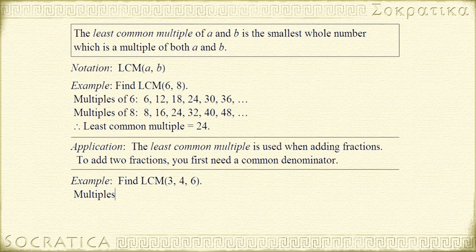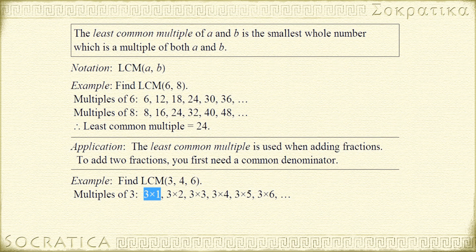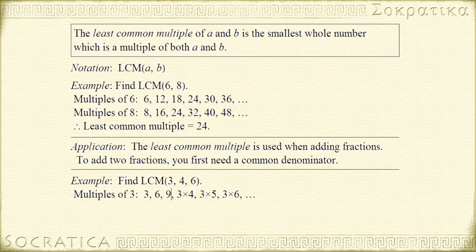Let's start by listing the multiples of 3. The first several multiples are 3 times 1, 3 times 2, 3 times 3, 3 times 4, 3 times 5, 3 times 6, and so on — it goes on forever. Evaluating: 3 times 1 is 3, 3 times 2 is 6, 3 times 3 is 9, 3 times 4 is 12, 3 times 5 is 15, and 3 times 6 is 18.